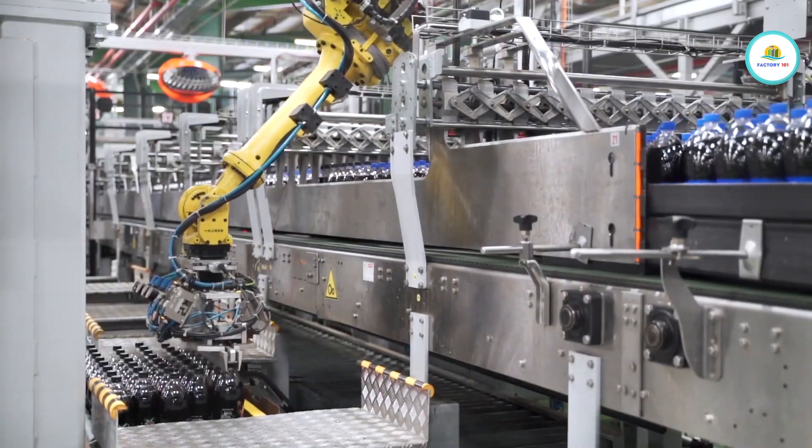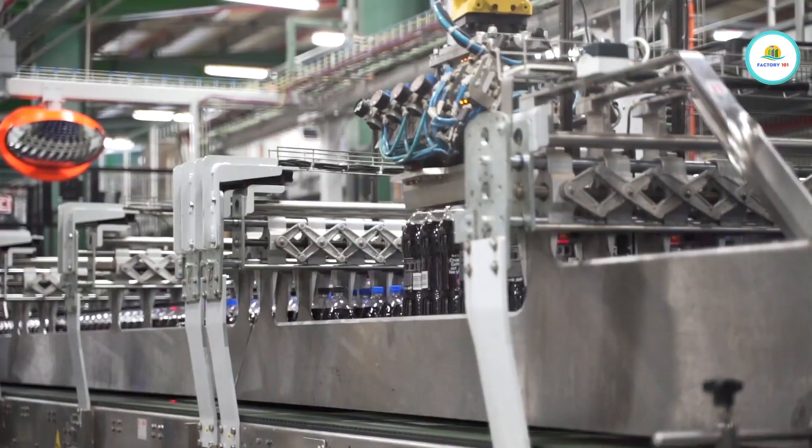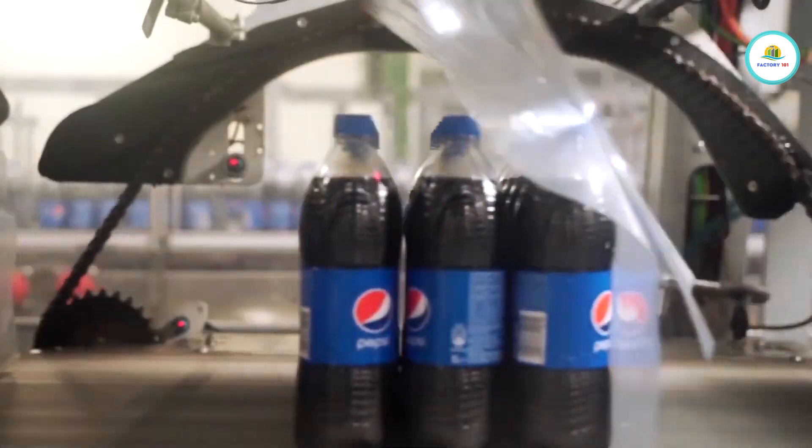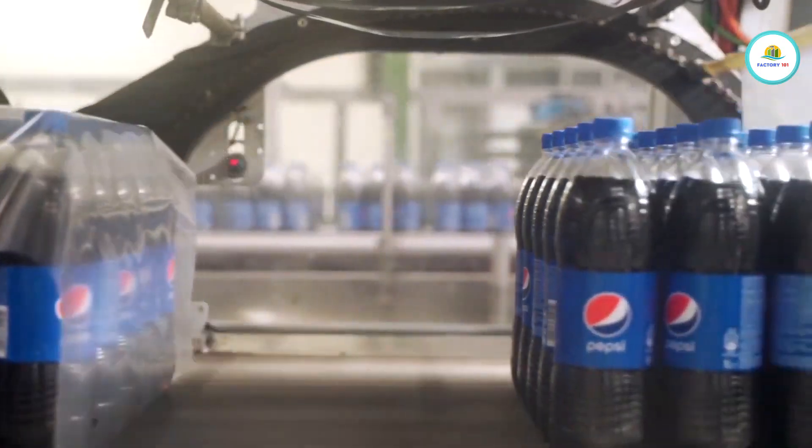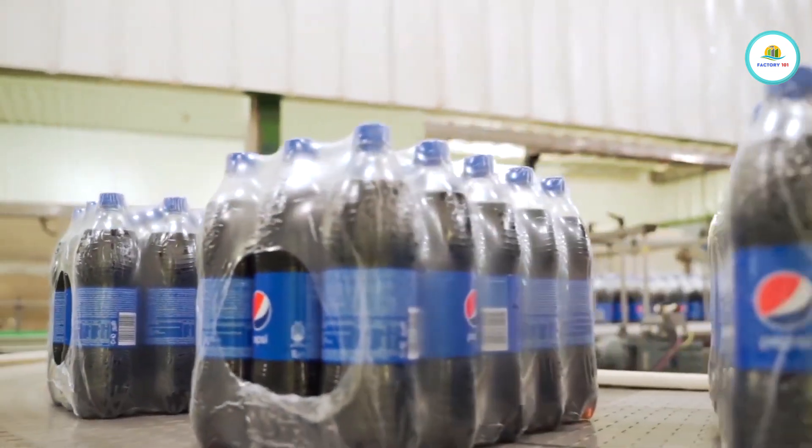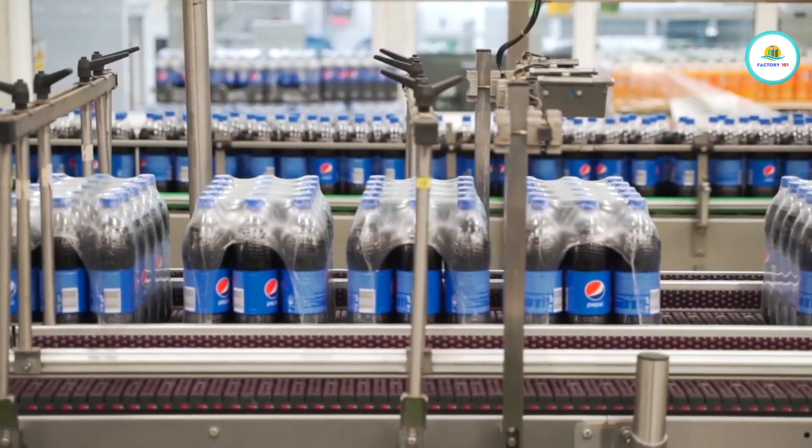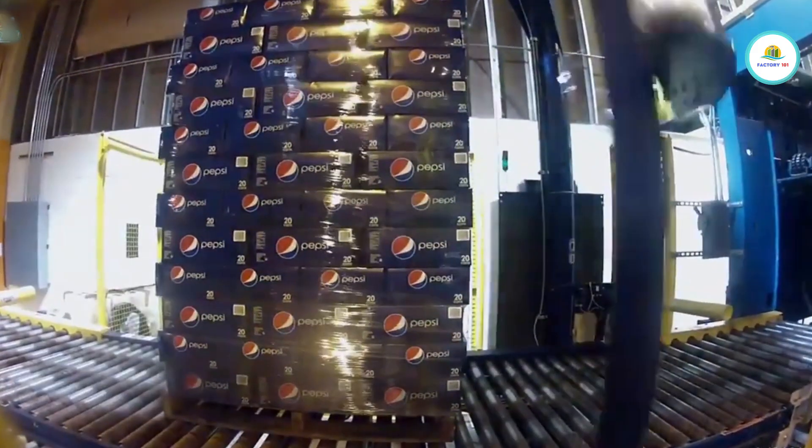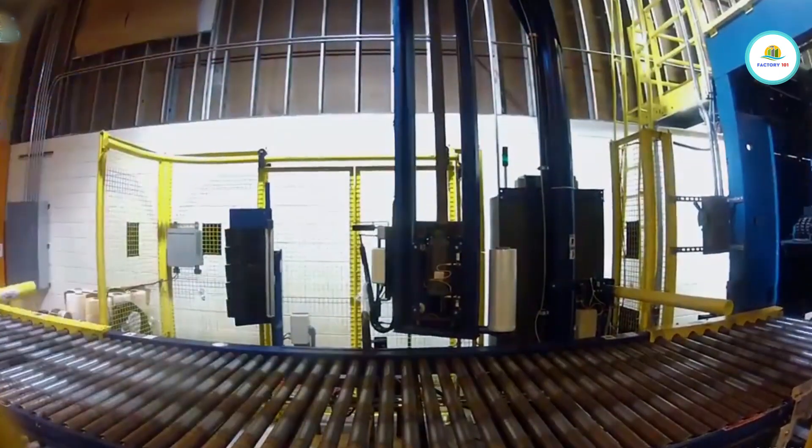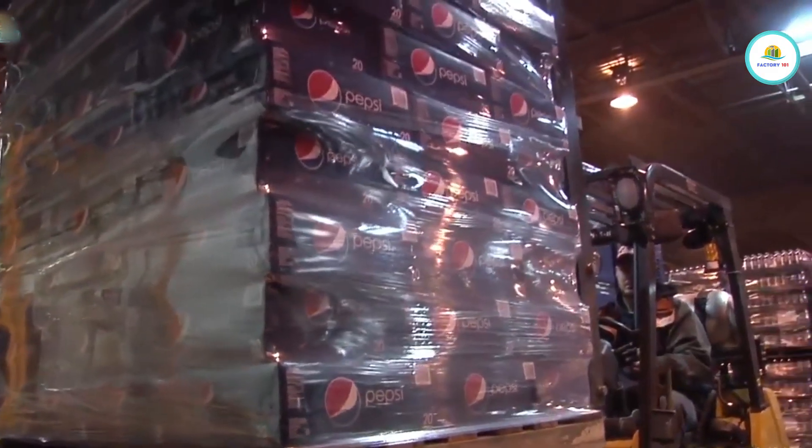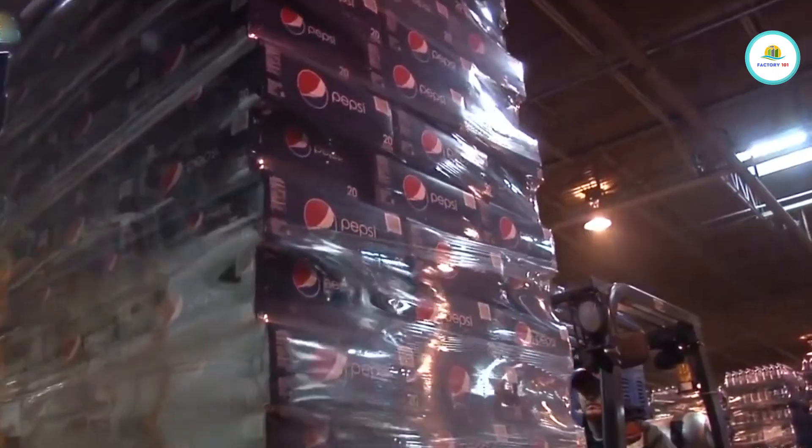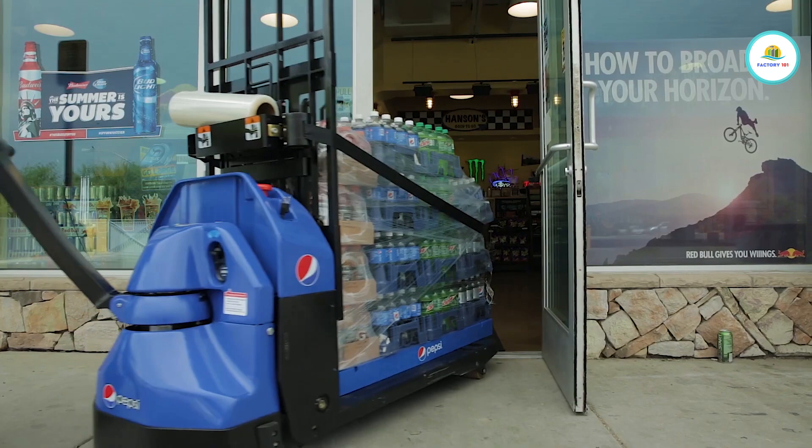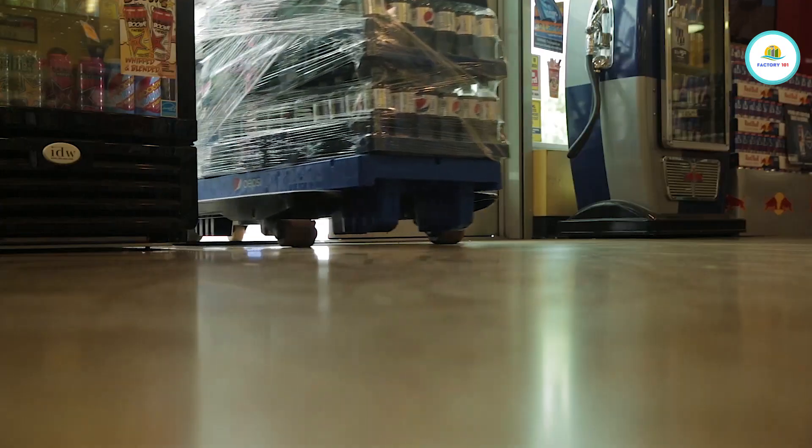Once capped and labeled, the bottles head to the packaging section. Here, machines wrap them in packs of 6, 12, or 24 using robotic arms and shrink wrap tunnels. They're palletized, scanned, and stacked using automated forklifts that drive themselves using LiDAR technology, like mini Teslas inside the warehouse. Then, they're shipped across cities, states, and countries within hours, from raw water to your fridge in as little as 48 hours.